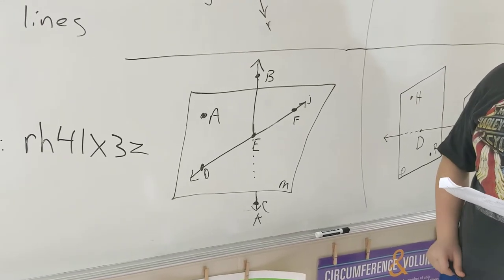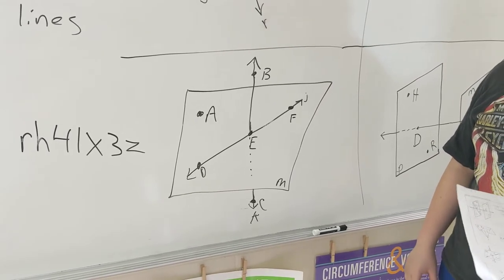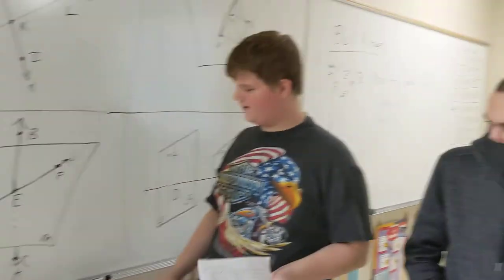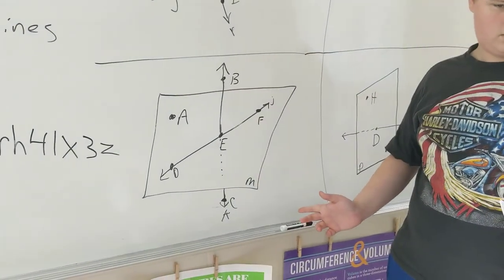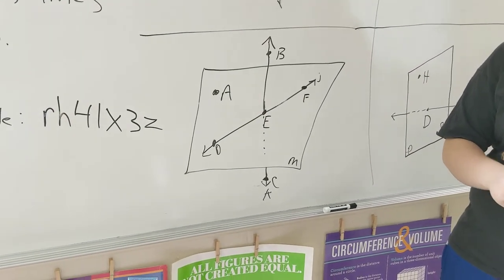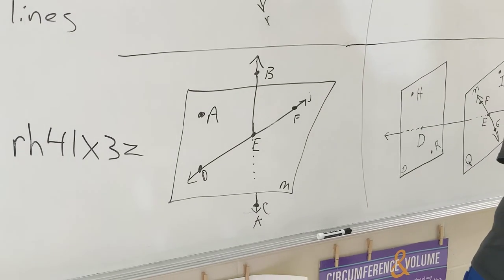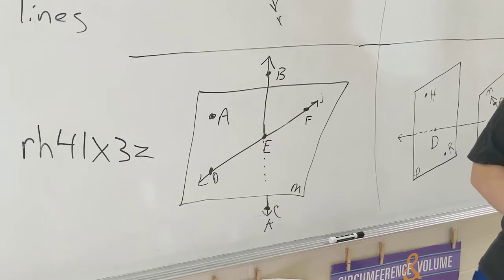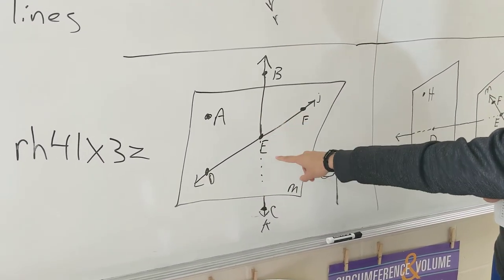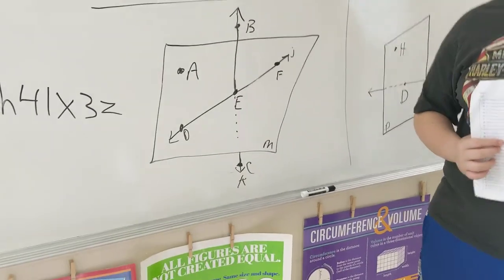An example of three non-collinear points. One of the examples, actually wait, no, I'll let Carlos answer this. Alright. Just three points that are not on the line. DEA. DEA? That works. Very good.